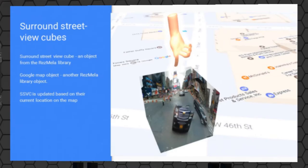One limitation we have is that we use MOAP to display those Google Street View maps, and we are limited by the number of MOAP surfaces that can be displayed at one time. Right now, with our machines that are able to render them, in our experiments you can get away with about eight or nine concurrent MOAP surfaces displaying these street views or the map. So that is one of the limitations.